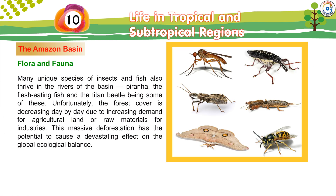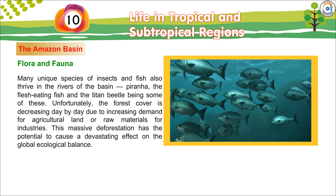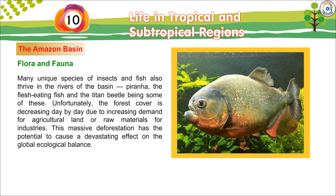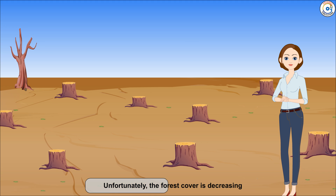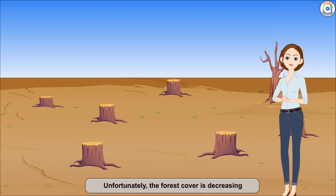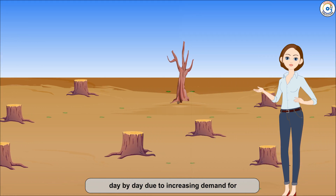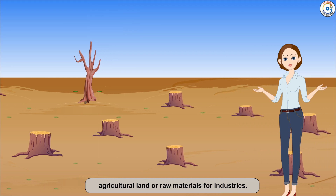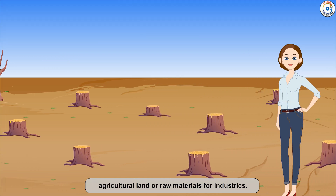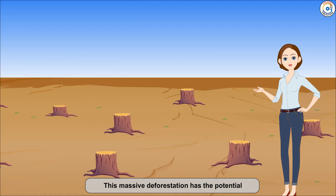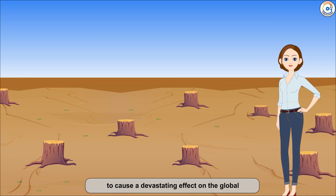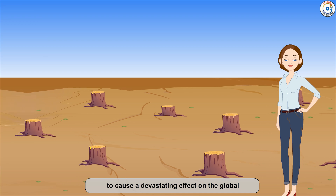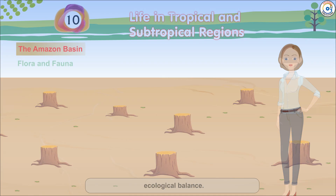Many unique species of insects and fish also thrive in the rivers of the basin, including the piranha, the flesh-eating fish, and the titan beetle. Unfortunately, the forest cover is decreasing day by day due to increasing demand for agricultural land and raw materials for industries. This massive deforestation has the potential to cause a devastating effect on the global ecological balance.